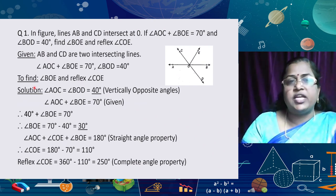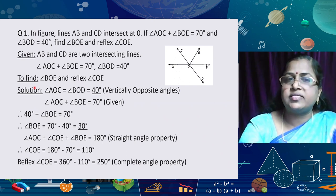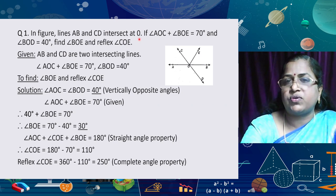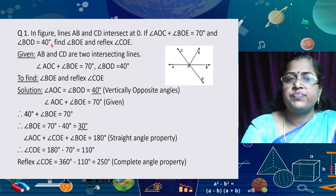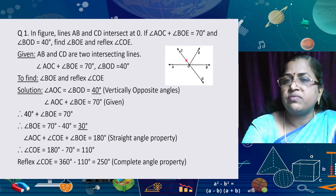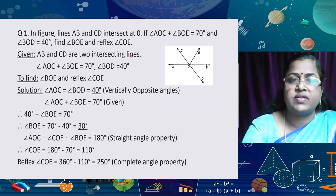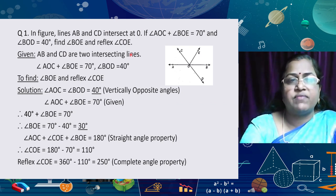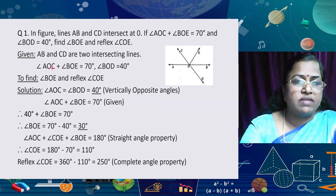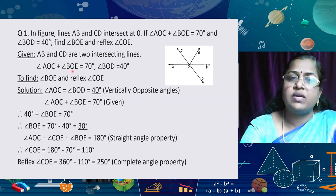Now, after explaining the properties, angles, lines, and theorem proofs, we can apply these properties to solve questions. The first question: in the figure, lines AB and CD intersect at O. If angle AOC + angle BOE = 70° and angle BOD = 40°, find angle BOE, angle COE, and the reflex angle COE. Given: AB and CD are two intersecting lines; angle AOC + angle BOE = 70°; angle BOD = 40°.